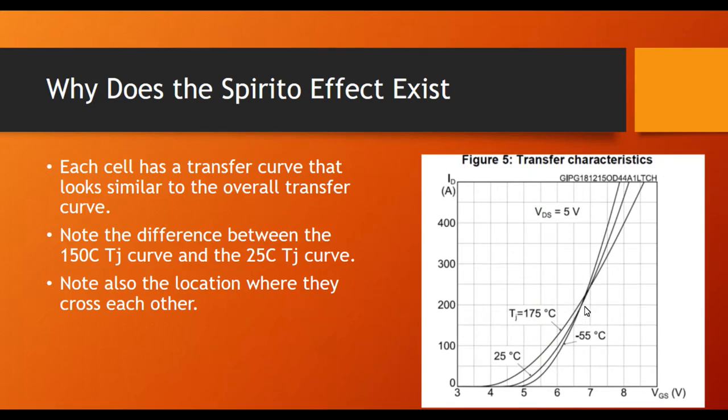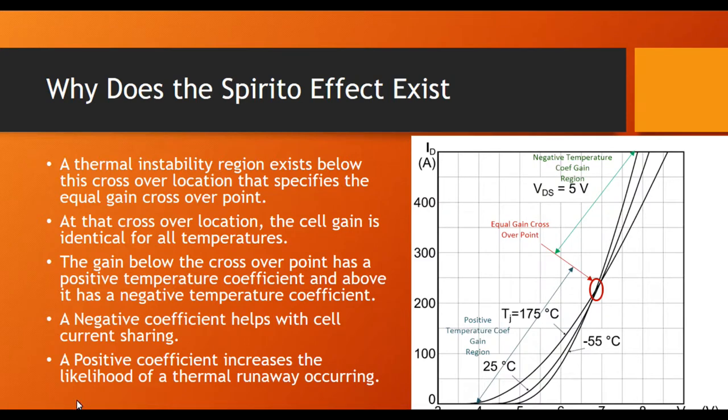Below this region you'll notice that there's a fairly large gap between the lower temperatures and the higher temperatures and the same with above it. Now this thermal instability region exists below this crossover point, and this is the point at which the gain for the cell is equal for all temperatures. So 175 degree junction temperature would have the same gain as minus 55 degree junction temperature.